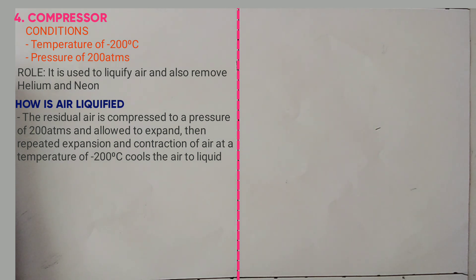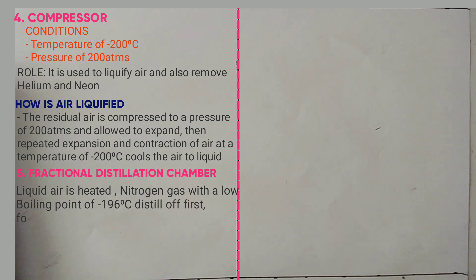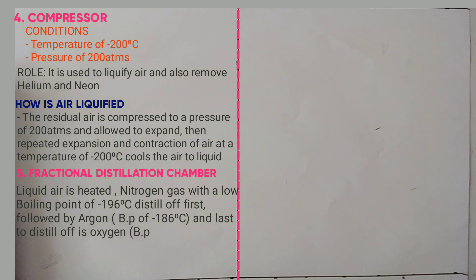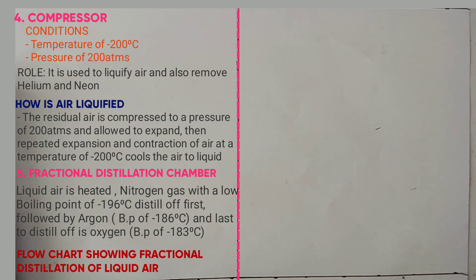The liquid air is pumped into the fractional distillation chamber where it is heated. Nitrogen, having the lowest boiling point of negative 196°C, distils off first, followed by argon at negative 186°C, and lastly oxygen gas, which has a boiling point of negative 183°C.